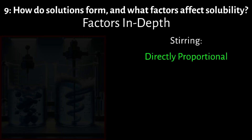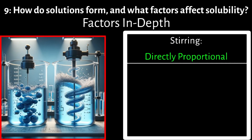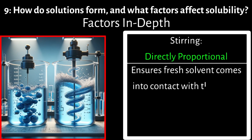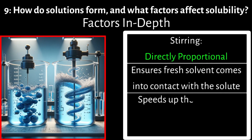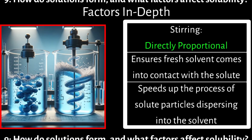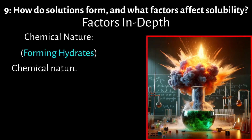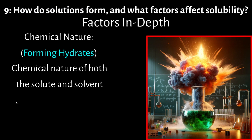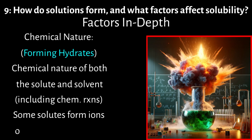Stirring a solution increases the rate of dissolution by ensuring fresh solvent continually comes into contact with the solute, thus speeding up the process of solute particles dispersing into the solvent. Chemical nature: the chemical nature of both the solute and solvent, including any chemical reactions that may occur between them, can affect solubility. Some solutes form ions or hydrates in solution, altering their solubility characteristics.